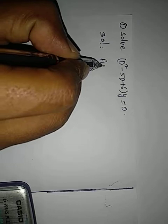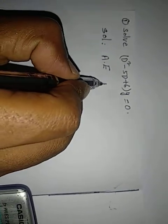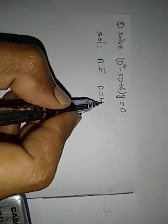So, first of all, for the solution, write down the auxiliary equation. See, auxiliary equation means substitute d is equal to m.